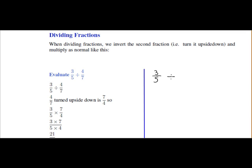So if we had 3 fifths divided by 2 over 3, what we'd do is we'd keep the first fraction the same, but we'd invert the second one, so 2 over 3 becomes 3 over 2, and we'd multiply.